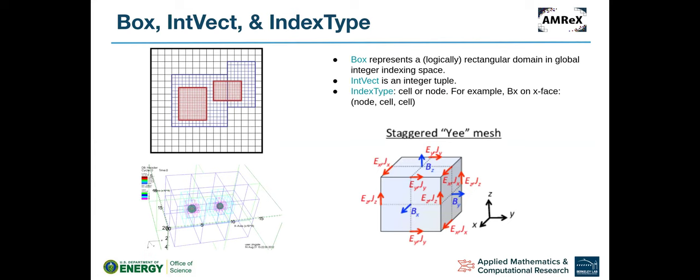Now I'm going to talk about some basic MX concepts and classes. As mentioned, MX is a block-structured AMR framework using a structured mesh. We use a class called Box to represent a logically rectangular domain in global integer space, and we also have a class called IntVect, which is an integer tuple — i, j, k — one for each direction.